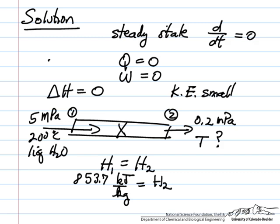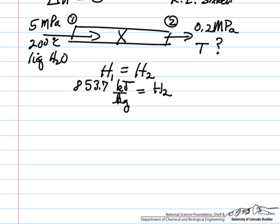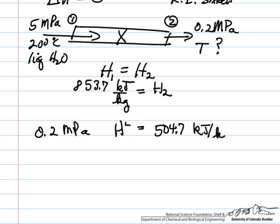So likewise if we go to the steam tables and look at the conditions at 0.2 megapascals. Enthalpy for liquid, if it were at saturation conditions, 504.7 kilojoules per kilogram. And let's write this for saturation.